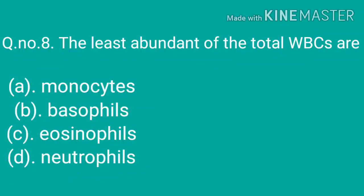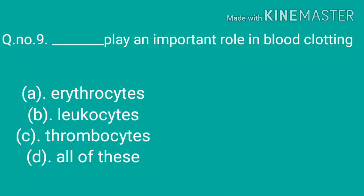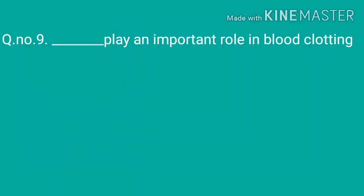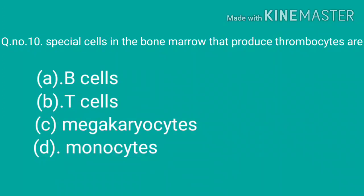Question 8: The least abundant of the total WBCs are — options: monocytes, basophils, eosinophils, or neutrophils. The correct answer is basophils. Question 9: Dash play an important role in blood clotting — options: erythrocytes, leucocytes, thrombocytes, or all of these. The correct answer is thrombocytes. Question 10: Special cells in the bone marrow that produce thrombocytes are — options: B cells, T cells, megakaryocytes, or monocytes. The correct answer is megakaryocytes.